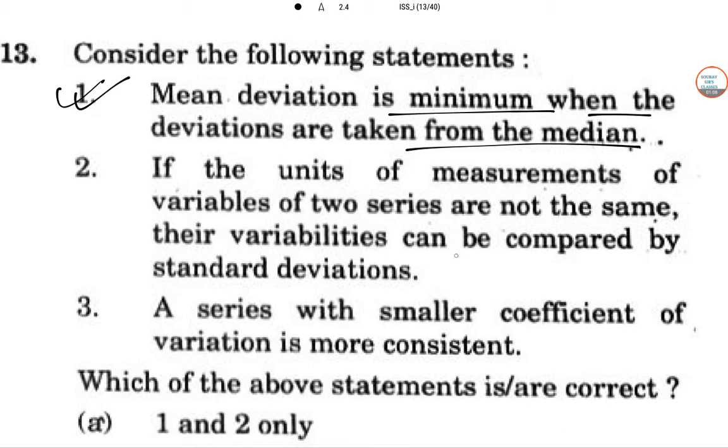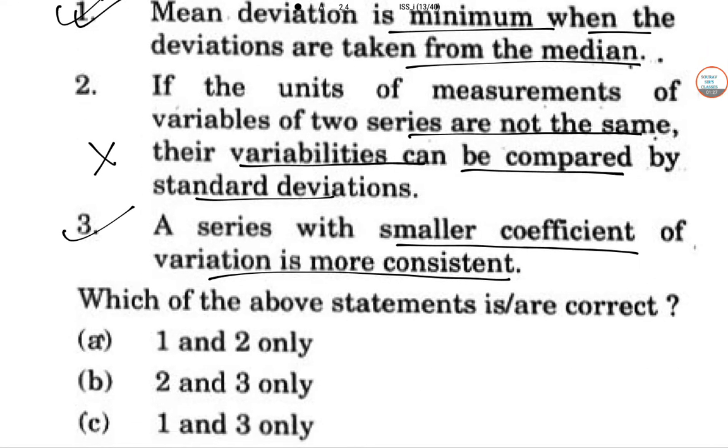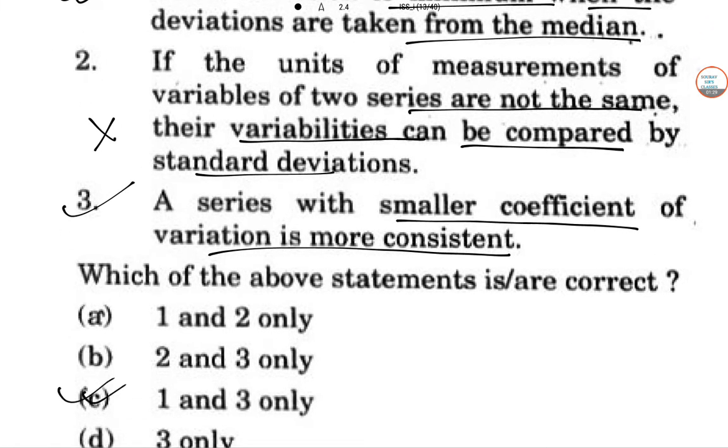If the units of measurement of the variable of the 2 series are not the same, then their variabilities can be compared by the standard. Then it cannot be compared. So for that the basic thing will be same. A series with a smaller coefficient of variation is more consistent. Answer is yes, this is correct. So 1 and 3 is the correct answer. So option number C.